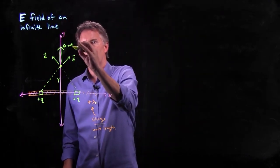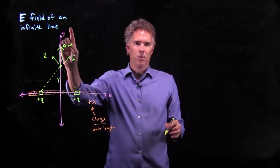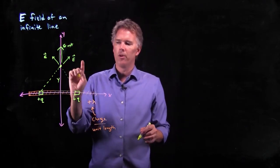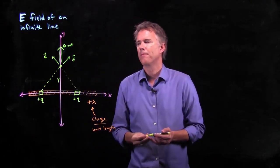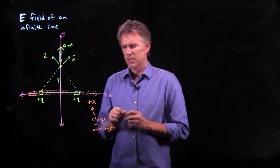So by symmetry, we can argue that any electric field above this line has to be pointing radially outward from that line. But how do we calculate exactly what that is?